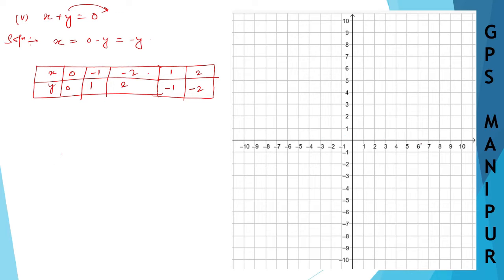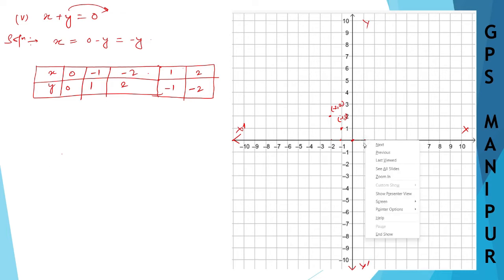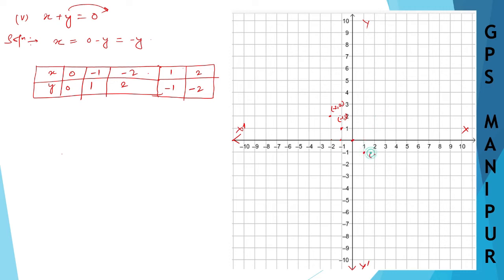So now: when x is 0, y is 0 — mark that point. When x is minus 1, y is 1 — so the point is (minus 1, 1). When x is minus 2, y is 2 — mark point (minus 2, 2). When x is 1, y is minus 1 — so point (1, minus 1).